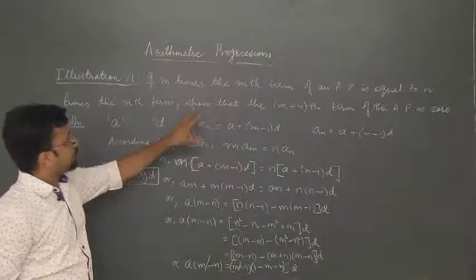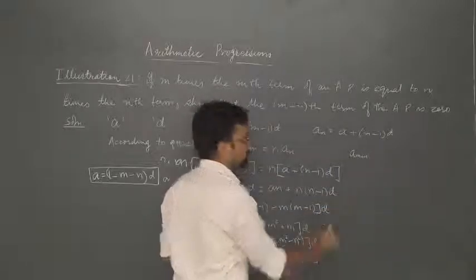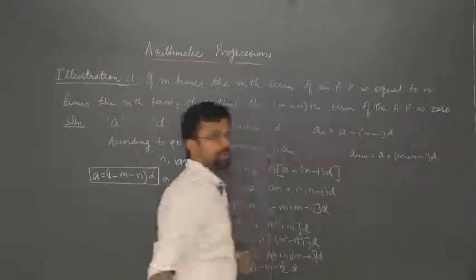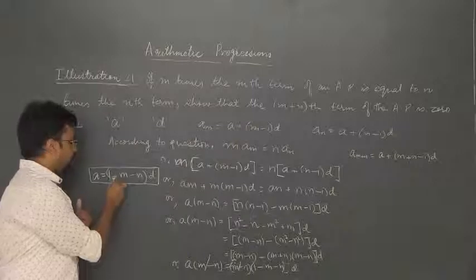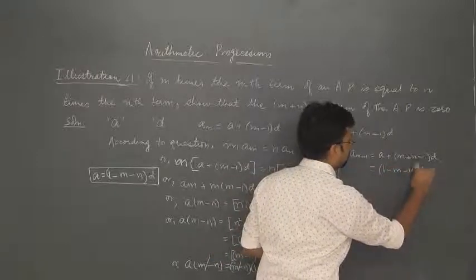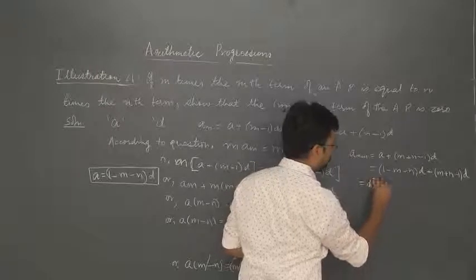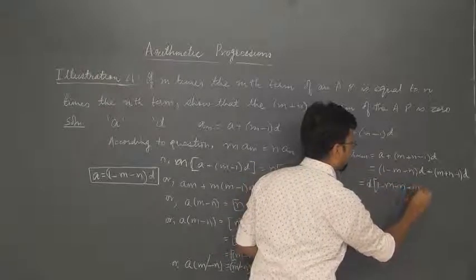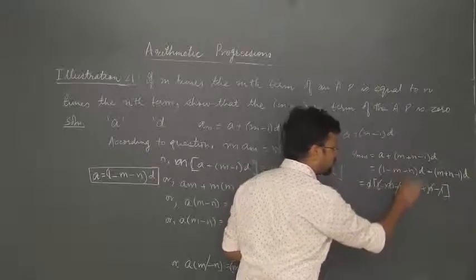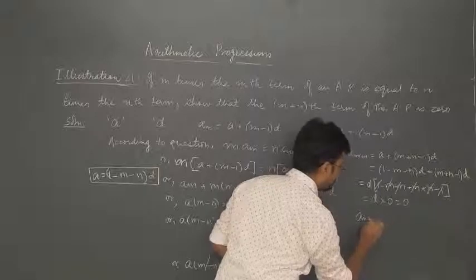Now we have to find the (m+n)th term of the AP and show it equals 0. The (m+n)th term, a_(m+n), equals a plus (m plus n minus 1) into d. Substituting a equals [1 minus (m plus n)] into d, we get: [1 minus (m plus n)] into d plus (m plus n minus 1) into d. Taking d as common, inside the bracket we have 1 minus m minus n plus m plus n minus 1. The 1 and 1 cancel, minus n and plus n cancel, minus m and plus m cancel. So we get d into 0, which equals 0. Therefore a_(m+n) equals 0.